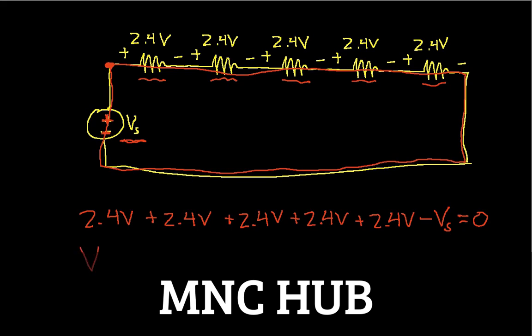So I can solve for Vs, and I get Vs is 2.4 plus 2.4 plus 2.4 plus 2.4 plus 2.4. And when I add these together, I get 12 volts. So what this tells me is that if I want to give these light bulbs the proper voltage, I would need to have a source voltage of 12 volts, which is not that realistic of an example, but it does illustrate Kirchhoff's voltage law beautifully. So that concludes this video.